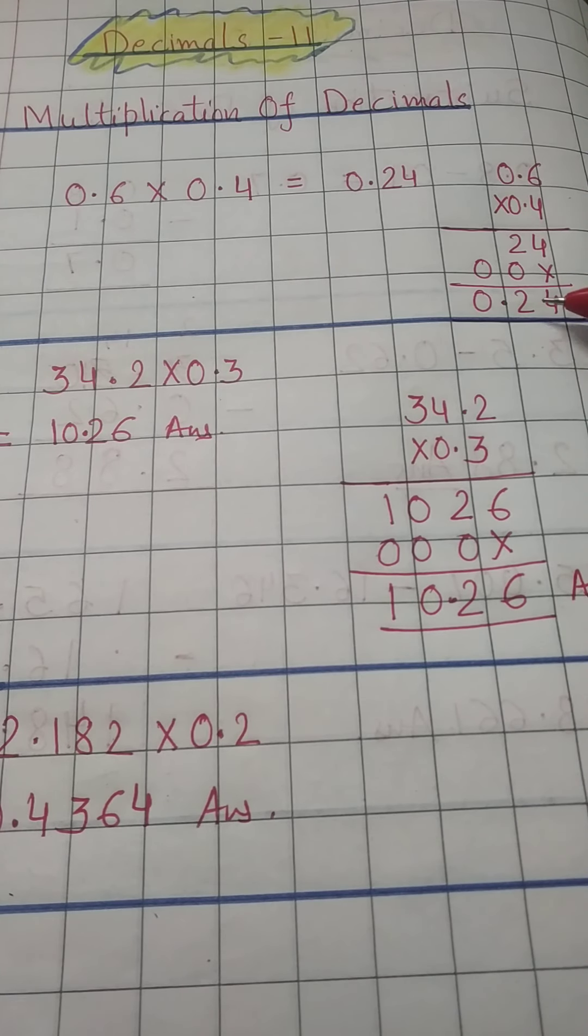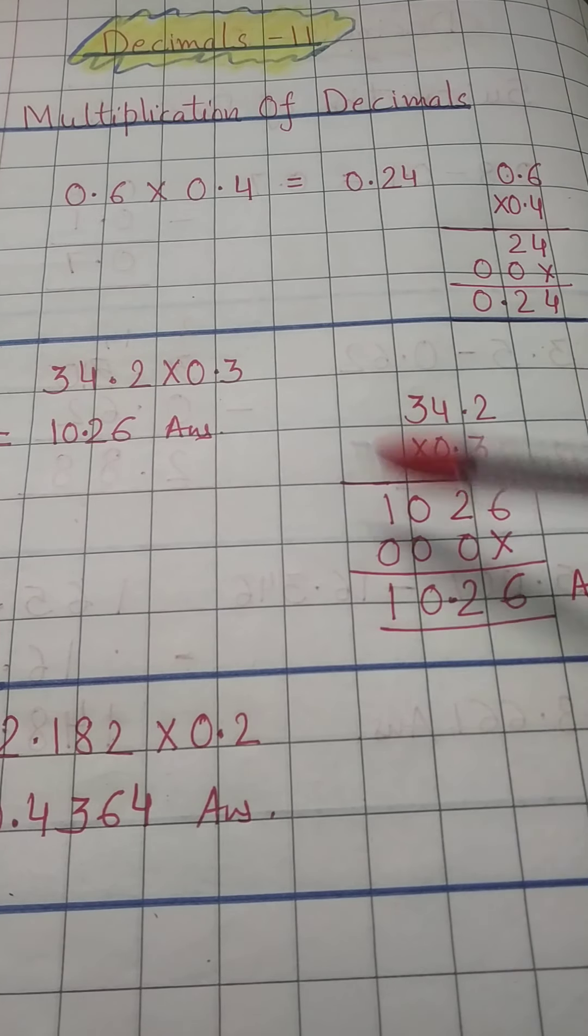After decimal number 1, 2, so you will put decimal from here 1, 2, and then decimal. Understood? Next question is 34.2 into 0.3, this is the question, right?